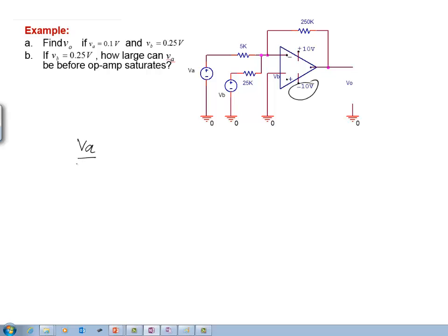V A over 5 plus V B over 25 plus V 0 over 250 equal to 0.